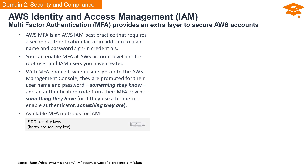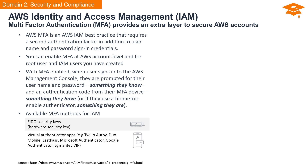AWS supports multiple MFA mechanisms. The FIDO Security Key, which stands for Fast Identity Online, offers a hardware-based approach to MFA — users insert a physical security key into their devices to authenticate, providing a high level of security. Virtual MFA devices are authenticator applications that run on a phone or other device and emulate a physical device; examples include Twilio Authy, Duo Mobile, LastPass, Microsoft Authenticator, Google Authenticator, and Symantec VIP. Hardware tokens also support the TOTP algorithm and are provided by Thales, a third-party provider, for use exclusively with AWS accounts.